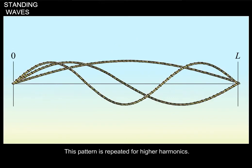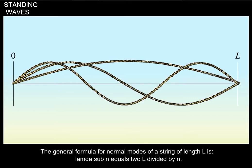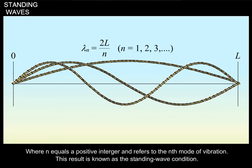This pattern is repeated for higher harmonics. The general formula for normal modes of a string of length L is lambda sub n equals 2L divided by n, where n equals a positive integer and refers to the n-th mode of vibration.